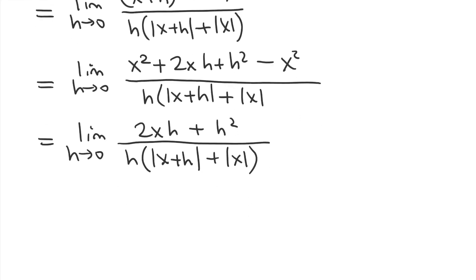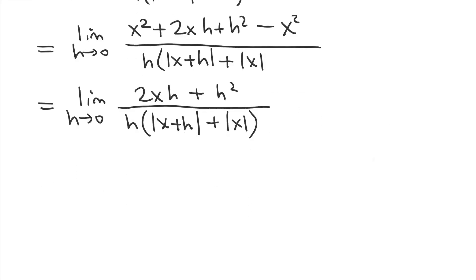And then, notice that both terms in our numerator have a factor of h. So, we're going to cancel out one of the factors of h in the numerator and that factor of h in the denominator. So, in the numerator, we get 2x, no more h, and then just a single h, not h squared. In our denominator, we have this. And now, you can see, we can plug in h equals 0 in both the numerator and the denominator.